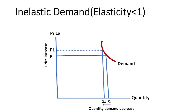In inelastic demand, the responsiveness of change in quantity demanded is less than the price change. When price increases from P1 to P2, quantity demanded decreases from Q1 to Q2. Elasticity is less than 1 because there is less responsiveness of quantity demanded change due to price change.